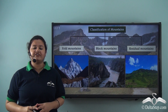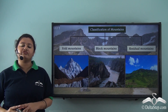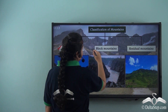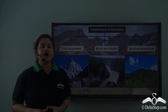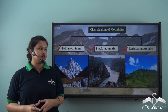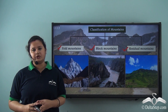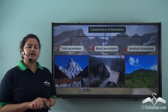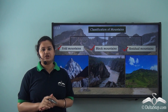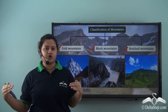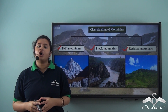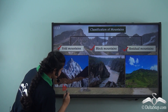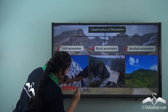Thus, we can classify the mountains into three types on the basis of their formation. The three types are fold mountains, block mountains, and residual mountains. I have already discussed about the formation of fold mountains and block mountains in my previous video. Let me again tell you that fold mountains are formed by the collision of tectonic plates. When two tectonic plates collide, the overlying rocks get folded or crumble up. This is the picture of the Himalayas. Himalayas is an example of fold mountains.